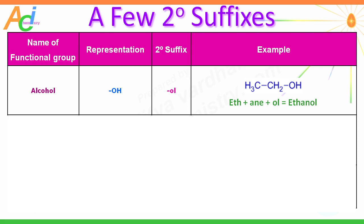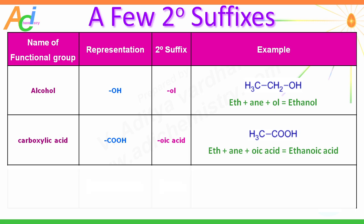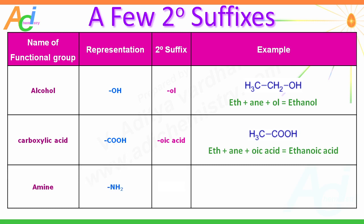Note that the terminal '-e' in '-ane' is omitted when writing the complete name. If there is a carboxylic acid group (COOH) in a molecule, we use '-oic acid' as the secondary suffix. For example, a molecule with two carbon atoms and a COOH group is named ethanoic acid. For an NH2 group, the secondary suffix is '-amine'. A molecule with one carbon atom, no unsaturation, and an NH2 group is named methanamine. Remember, there are many other functional groups and secondary suffixes to explore.